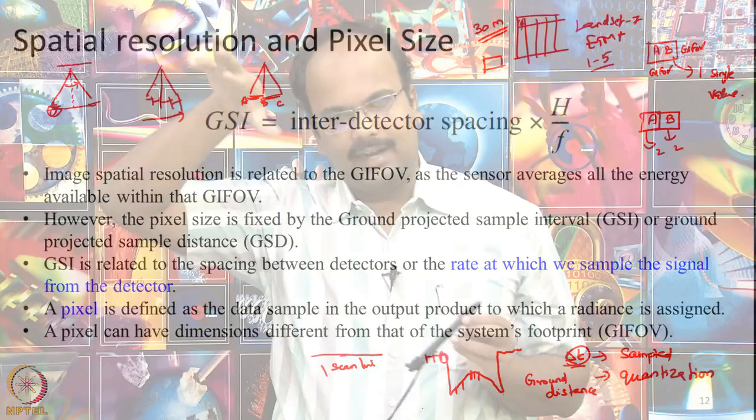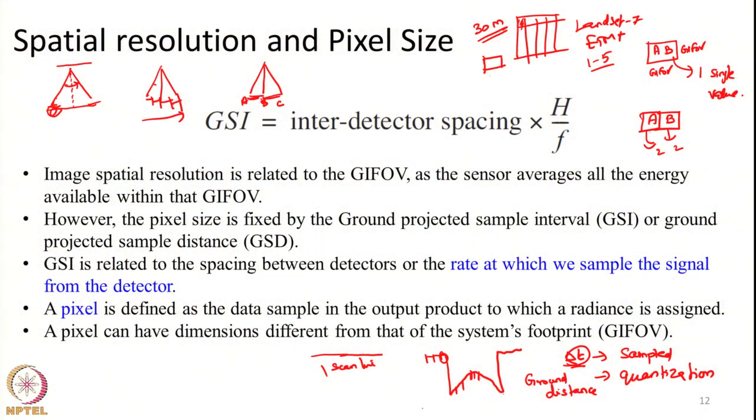Say at delta T interval the scanner moves 30 meters on the ground — one sample is collected for a distance of 30 meters. At 2 delta T the scanner would have moved another 30 meters, and another sample is collected. So every 30 meters on the ground we collect one sample — hence the pixel size is 30 meters. The pixel size is determined by our sampling interval, or the corresponding ground distance covered during that sampling interval. This is known as GSD — ground sampling distance — or GSI, ground sampling interval.